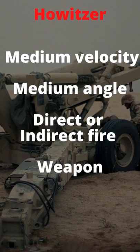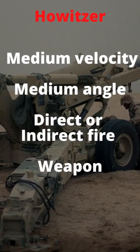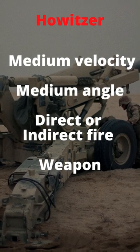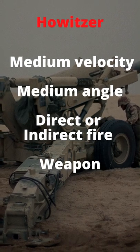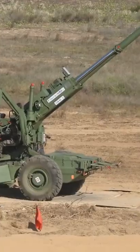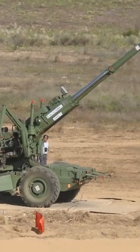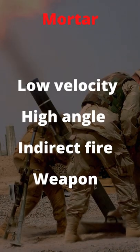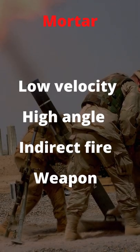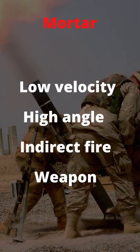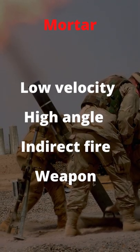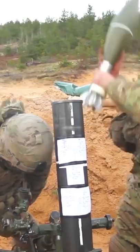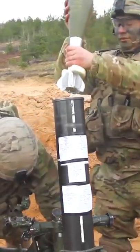Second, howitzer: a medium-velocity, medium-angle, direct- or indirect-fire weapon. Third, mortar: a low-velocity, high-angle, indirect-fire weapon.